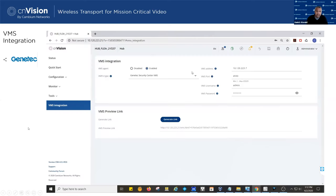On the VMS integration front, we currently support Genetech, Milestone, NX Witness, Network Optix, WiseNet (Hanwha), Avigilon, Axis, Siemens, and we're looking at Video Insight for Panasonic. We're open to integrating with other VMS systems — if there are popular brands in Canada, please reach out. We recognize that Dahua, Hikvision, and Uniview are also popular brands, though there are some challenges in the US market around Chinese brands, so those integrations are further down the roadmap.